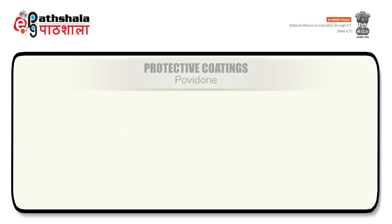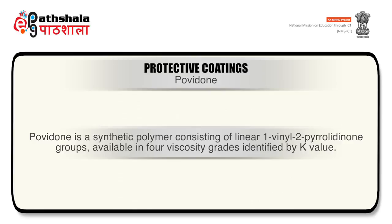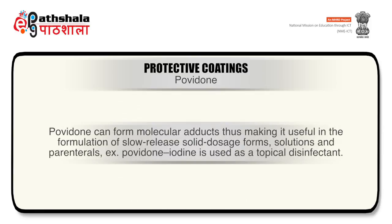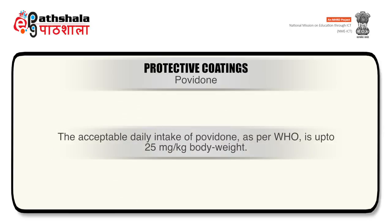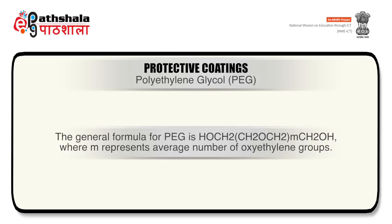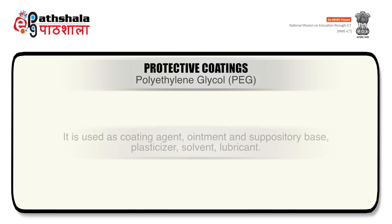Povidone is a synthetic polymer consisting of linear 1-vinyl-2-pyrrolidone groups, available in four viscosity grades identified by K value. It can be used as disintegrating agent, dissolution enhancer, coating agent, suspending agent, and tablet binder. Povidone can form molecular adducts, making it useful in the formulation of slow-release solid dosage forms, solutions, and parenterals. Example: povidone-iodine is used as a topical disinfectant. The acceptable daily intake of povidone per WHO is up to 25 mg per kg body weight. Polyethylene glycol (PEG) is used as coating agent, ointment and suppository base, plasticizer, solvent, and lubricant.